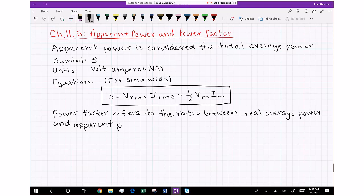That's the definition and the equation for power factor. It's equal to P over S. P is that real average power, and S is what we're covering now, which is apparent power, like that total average power. It's also equal to cosine of phi V, which is the phase angle of the voltage, minus phi I, which is the phase angle of the current.